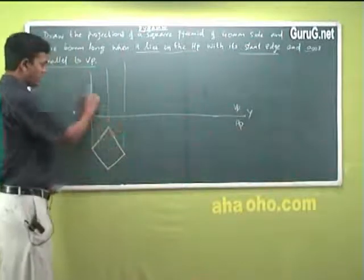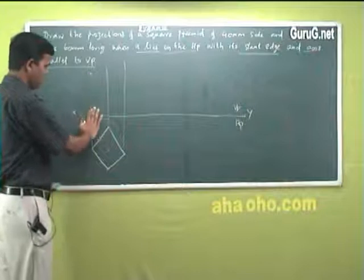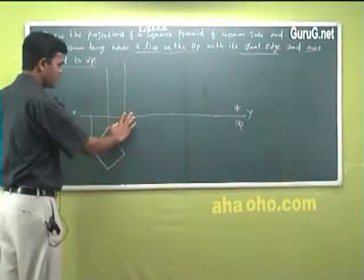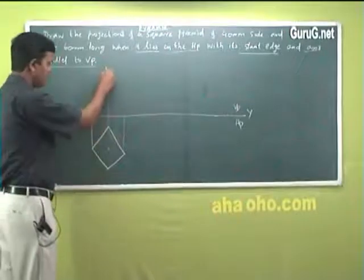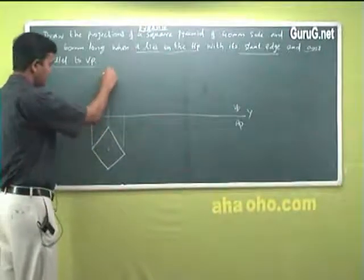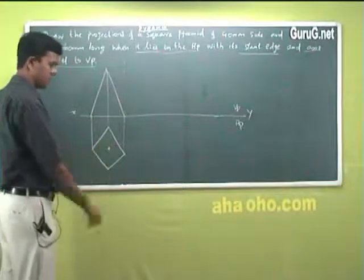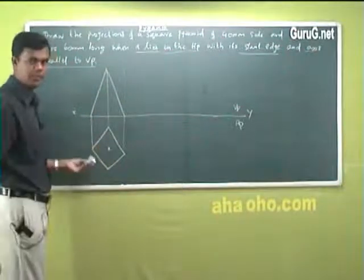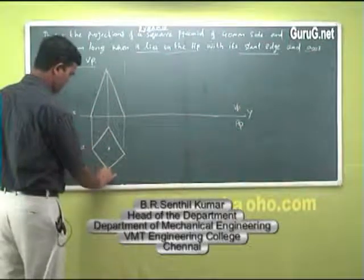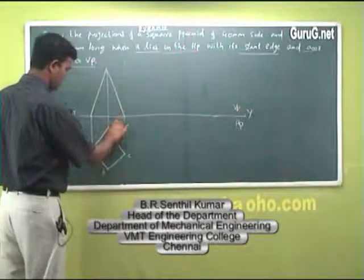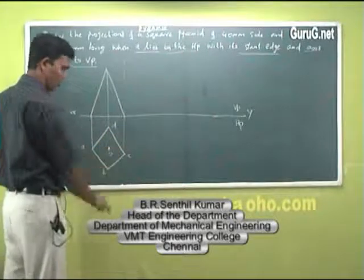Now just project the top view. Do I require a long center line here? No — because this is a pyramid. A pyramid has a single apex point only in the center. I will mark the points: A, B, C, D for the base corners, and this apex point is O.